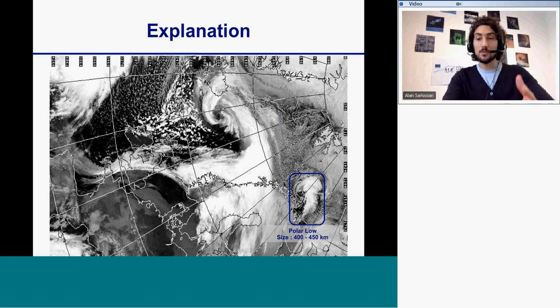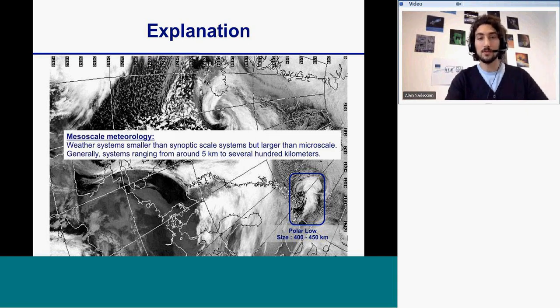And then I will show what is a polar low on the image. We'll see that it's a smaller scale, what we call a mesoscale for the meteorology. A weather system that is smaller than a synoptic scale but larger than a microscale.